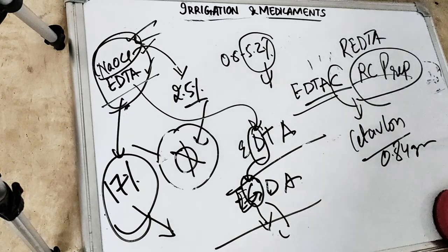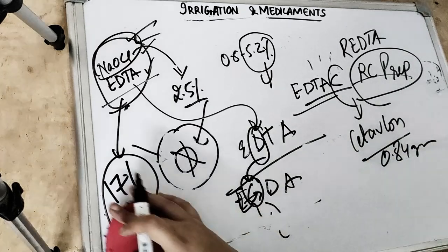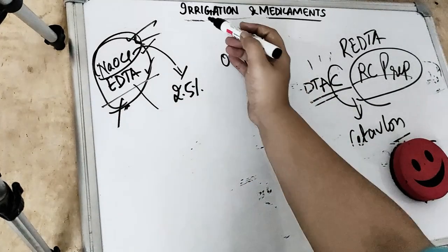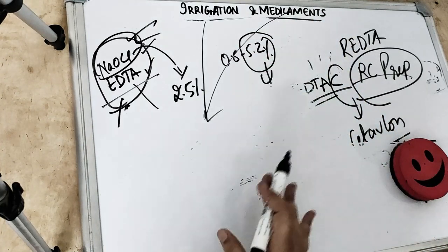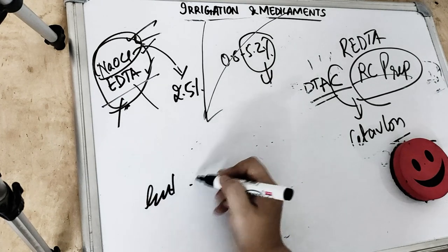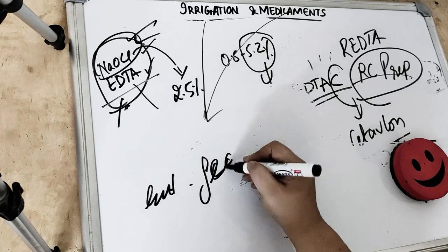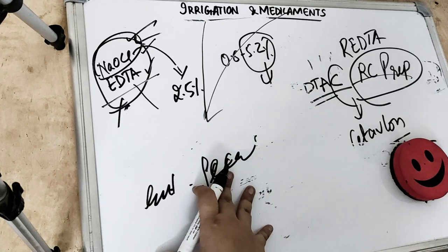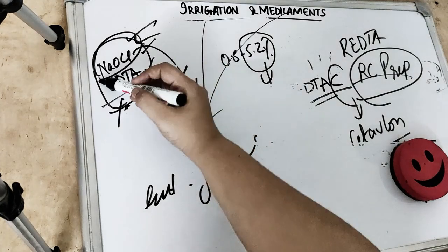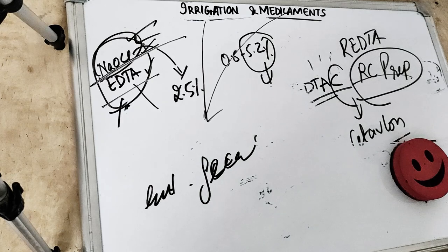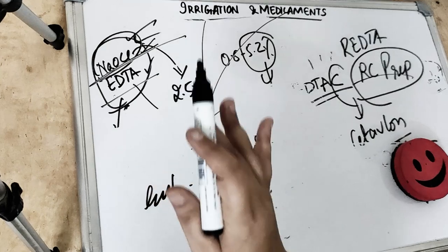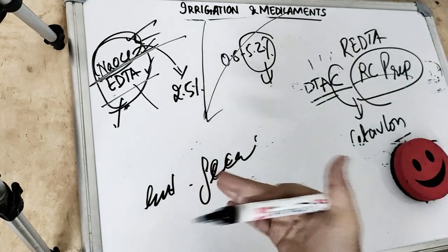Coming to chlorhexidine gluconate. Chlorhexidine gluconate you can use as irrigant also, as medicament also, because it has antimicrobial effect against enterococcus fecalis. So basically it is working in case of re-root canal. It doesn't remove the smear layer. Neither does sodium hypochlorite remove it, but EDTA removes the smear layer. So this is used as irrigant and as medicament both.